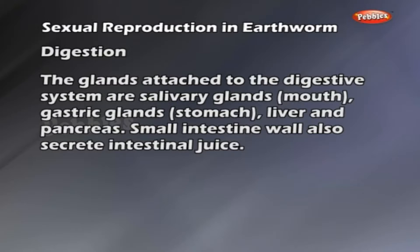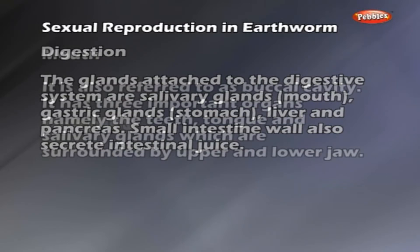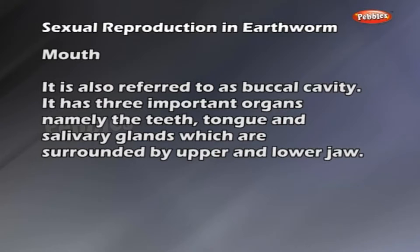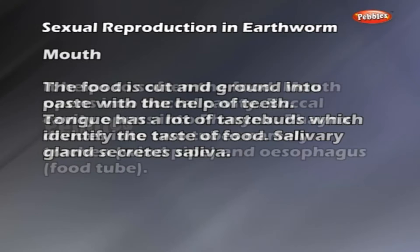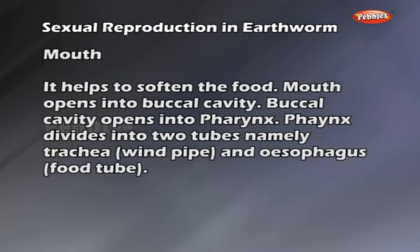The mouth, also referred to as the buccal cavity, has three important organs: the teeth, tongue and salivary glands, surrounded by upper and lower jaw. Food is cut and ground into paste with the help of teeth. The tongue has taste buds which identify the taste of food. Salivary glands secrete saliva which helps to soften the food. The pharynx divides into two tubes: the trachea (windpipe) and the esophagus (food tube).